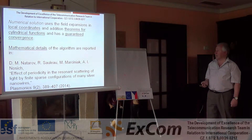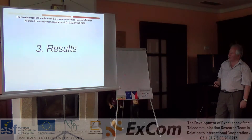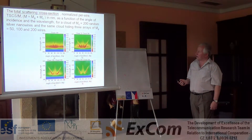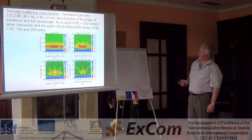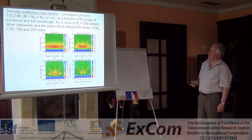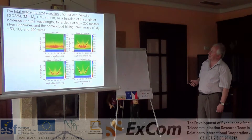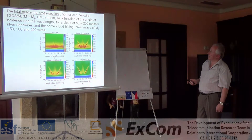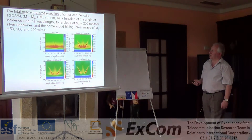Today I will concentrate on the results. The first picture shows the total scattering cross-section normalized per single wire — in short, the total scattering cross-section per single wire. Here M is the number of periodic and cloud nanowires, expressed in nanometers, as a function of the angle of incidence and the wavelength.